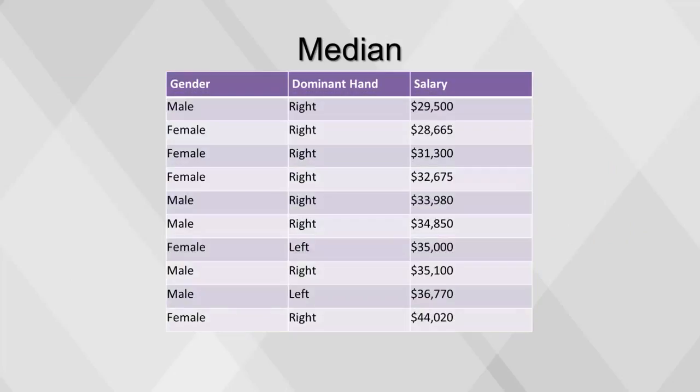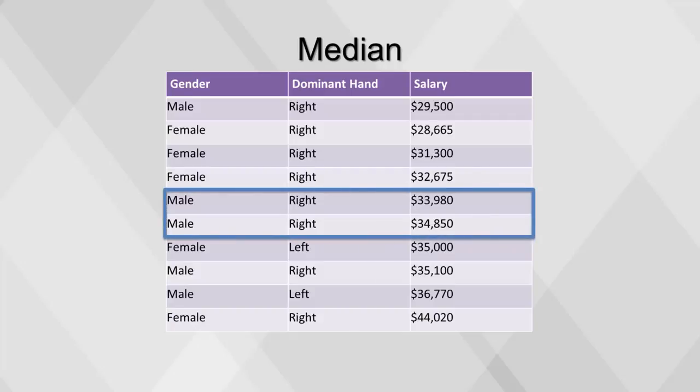To find the median, sort the numbers and find the middle value. If there are an odd number of rows, there is one middle value. If there are an even number of rows, there are two middle values, and the median will be the average of these two values. Here, we sort the table by salary, then find the average of the two middle values by adding $33,980 to $34,850 and dividing by 2 to get $34,145.